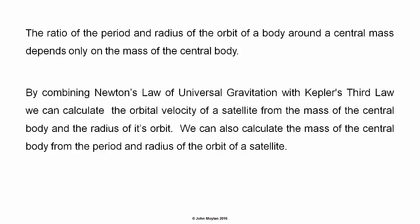The ratio of the period and radius of the orbit of a body around a central mass depend only on the mass of the central body. By combining Newton's law of universal gravitation with Kepler's third law, we can calculate the orbital velocity of a satellite from the mass of the central body and the radius of its orbit. We can also calculate the mass of the central body from the period and radius of the orbit of a satellite.